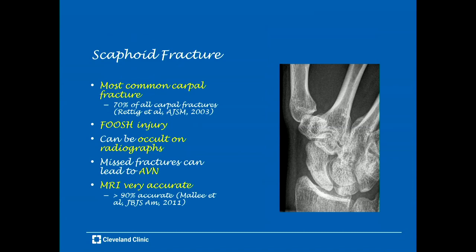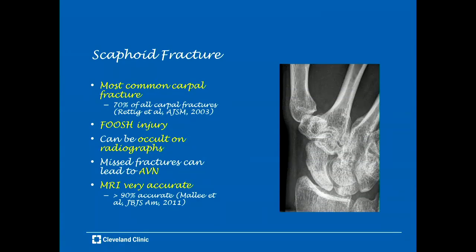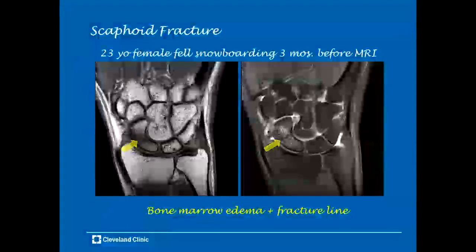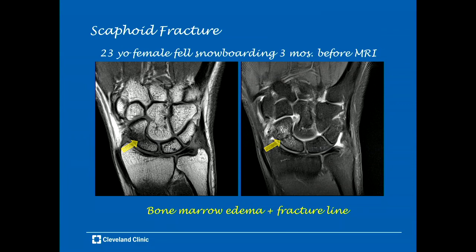One of the most common fractures that MRI is used for is the scaphoid fracture — the most common carpal fracture, accounting for 70% of all carpal fractures. It's usually a result of a fall on an outstretched hand, can be occult on radiographs, and missed fractures can lead to avascular necrosis. MRI is very accurate for identifying scaphoid fractures with greater than 90% accuracy reported. Here's a case in a 23-year-old female who fell snowboarding three months before the MRI. There's bone marrow edema on the T1-weighted image and the T2-weighted image, and a low linear T1 and T2 signal line through the waist of the scaphoid consistent with the fracture line — the key way to differentiate a bone contusion from a fracture.